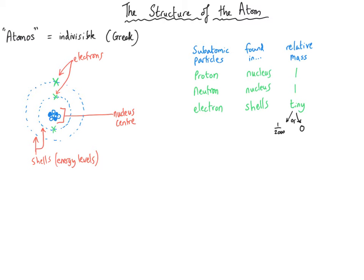What you notice is that all of the mass is actually found in the nucleus with the protons and neutrons. The electrons make up most of the space of an atom, but actually don't contain very much mass at all. The second property you need to know about for subatomic particles is their charge.